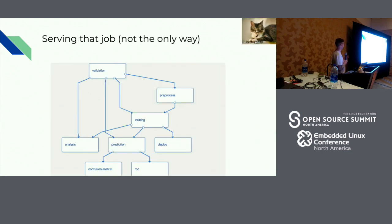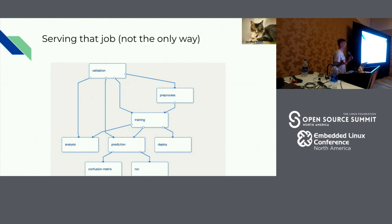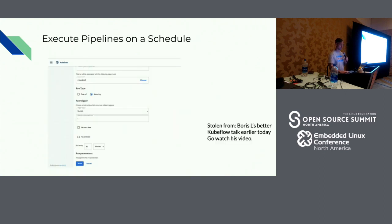This is what a pipeline might look like for a job you're actually trying to create and deploy — where you validate your data coming in, pre-process it, you have a training step that outputs analysis and prediction, then deploys it if it's good, and looks at confusion matrices. That's an example of a more real-world problem. You can also put pipelines on schedules, so if you want to retrain your model every so often, that's a thing you can do.